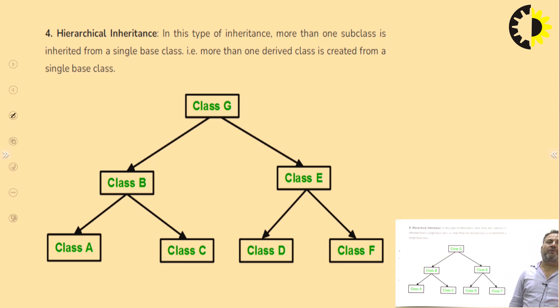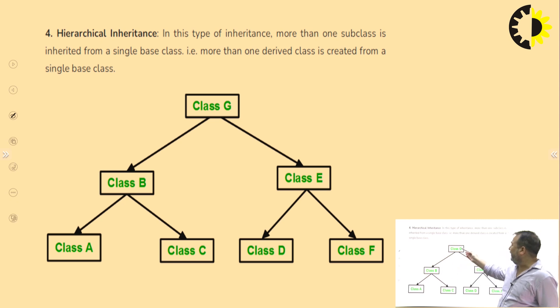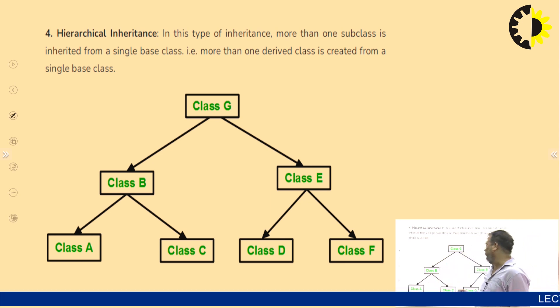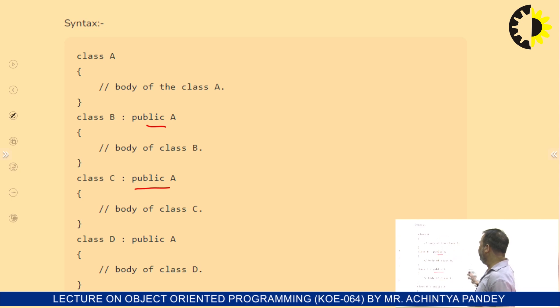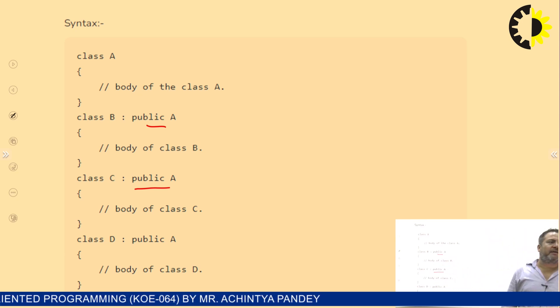Hierarchical inheritance can be identified just like a tree data structure. For example, G has two children B and E — B inherits from G, E inherits from G. A also inherits from B and thus inherits from G as well, showing multilevel too. In the code example: class B public A means B inherits A; class C public A means C also inherits A; class D public A means D inherits A. So B, C, and D are all children of A.